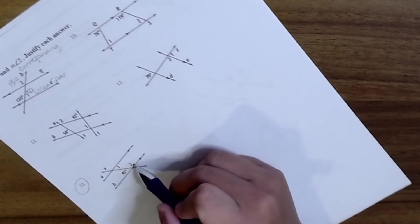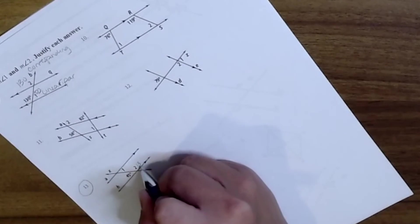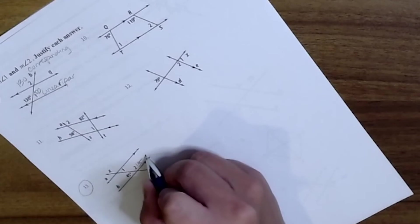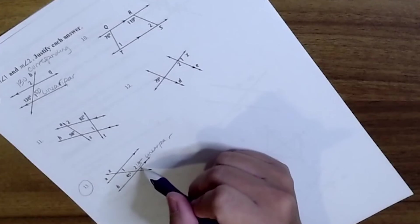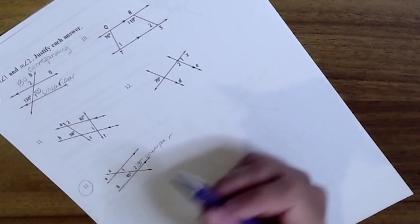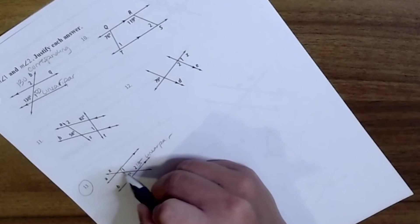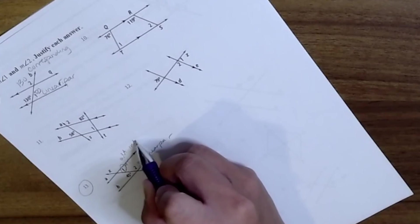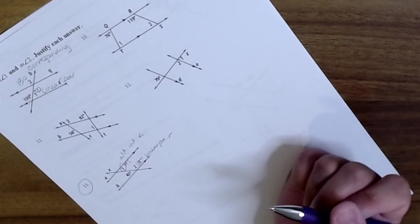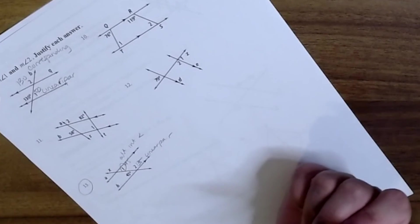13, so 13, 2 makes a linear pair, so 135 plus 45 is 180, so that makes a linear pair. And then alternate interior angle, so this is 45 because of alternate interior angles. And that is it for this section.